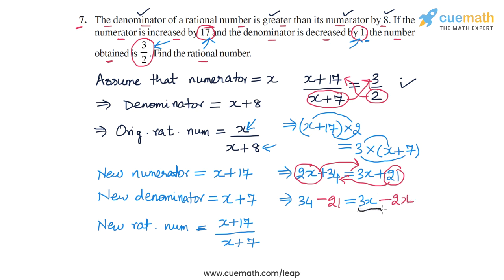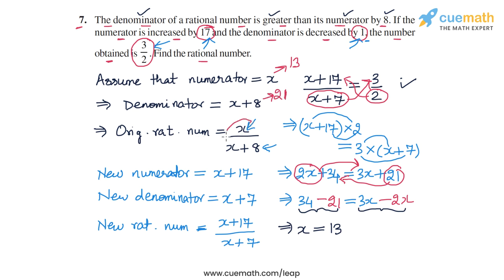This gives us x equals 34 minus 21, which equals 13. So the original numerator x is 13, and the original denominator x plus 8 is 21. This means that the original rational number x by x plus 8 is equal to 13 by 21.